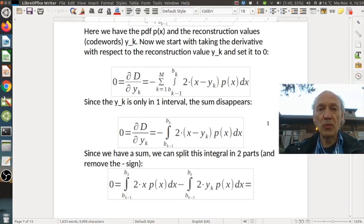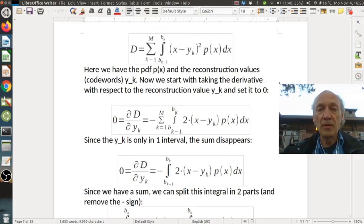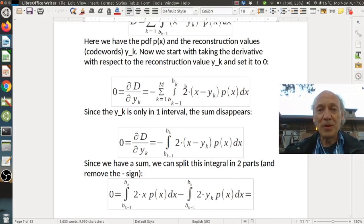Now we start with taking the derivative with respect to the reconstruction value y_k and set it to zero. Same approach as before but now with reconstruction values. So here we take the derivative, and this is what we now obtain. We have this quadratic function, take the derivative and we get two times this expression here.